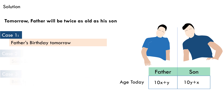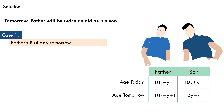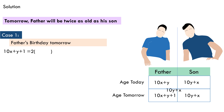For Case 1, let's see what happens if it's the father's birthday tomorrow. That means he'll be one year older tomorrow compared to today. His age tomorrow will be 10x plus y plus 1. The son, even tomorrow, will remain as old as he is today. Since tomorrow the father will be twice his son's age, we equate the father's age tomorrow to twice his son's age tomorrow: 10x plus y plus 1 equals 2 times (10y plus x).